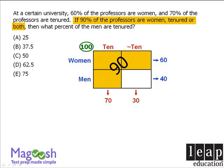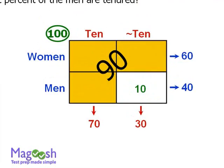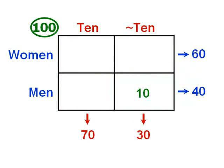This tells us the remaining 10 people must be in the last box. From here we can find the values for each remaining box. We know there are 30 untenured professors in total, so the untenured female box must be 20. We know there are 60 women altogether, so the tenured female box must be 40. And we know there are 40 men altogether, so the tenured male box must be 30.